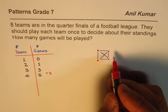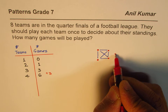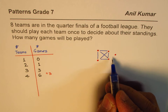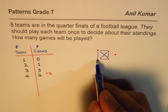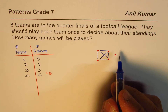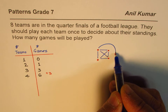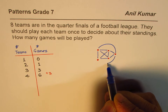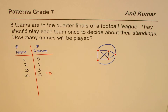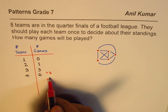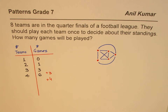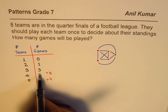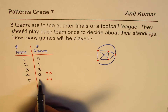If the fifth team joins in, this fifth team will play against all four teams — that means four additional games. So we add four to the previous number, which is six, to get the number of games for five teams: six plus four gives us ten.